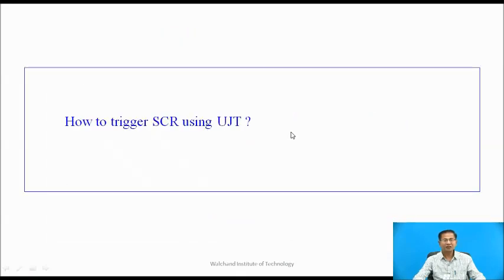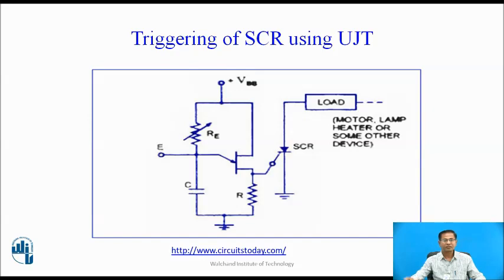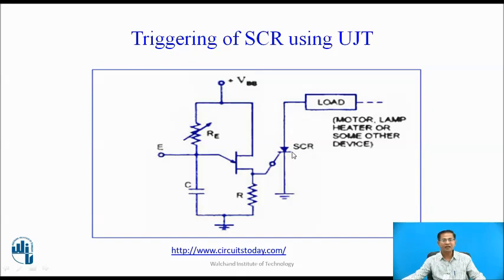How to trigger an SCR using UJT: This is the triggering circuit of SCR using UJT. When input is applied, the capacitor charges through Vs and R3, and the UJT remains off so no pulse is produced across R. When the capacitor voltage crosses the peak point voltage, the UJT conducts, capacitor C discharges through UJT and R, current increases rapidly, and a pulse is produced across R. This pulse acts as the triggering pulse for the SCR, causing the SCR to fire.